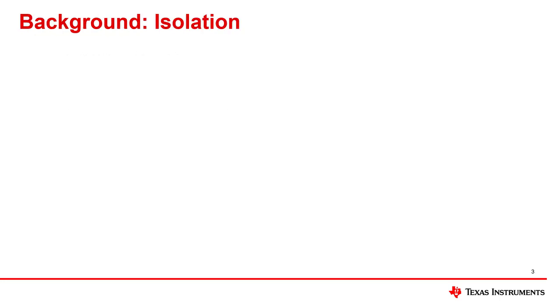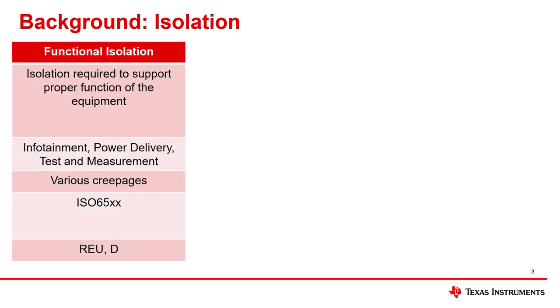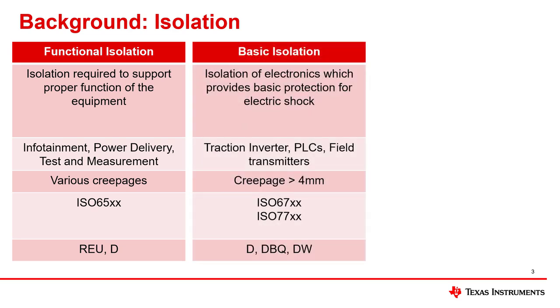Let's go over some background of isolation. There are three main types of isolation. We have functional isolation, which ensures the proper functionality of a system — we will be talking more about this in the next slides. We have basic isolation, which while maintaining system functionality also provides a layer of protection against electrical shock. This added safety feature, even in systems with rare human contact, ensures a safe working environment.